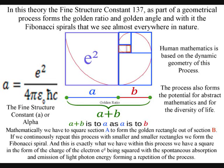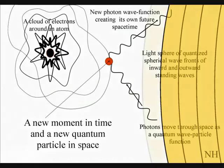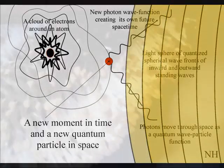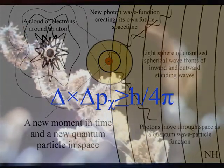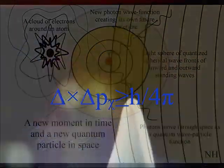And this is exactly what we have within this process. We have a square in the form of the charge of the electron being squared with the spontaneous absorption and emission of light photon energy, forming a repetition of the process.